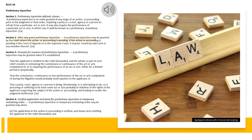Section 3. Grounds for Issuance of Preliminary Injunction. A preliminary injunction may be granted when it is established: that the applicant is entitled to the relief demanded, and the whole or part of such relief consists in restraining the commission or continuance of the act or acts complained of, or in requiring the performance of an act or acts either for a limited period or perpetually. That the commission, continuance,